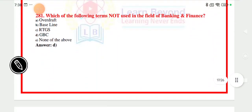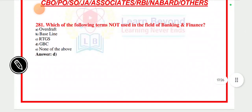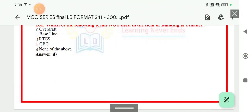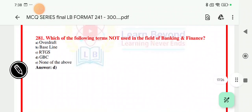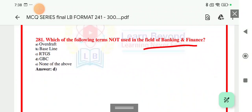We will start with question number 281. The question is: which of the following terms is not used in the field of banking and finance? This is an easy question, but generally the question asks which term is not related to banking and finance among the options.